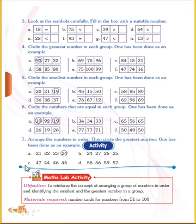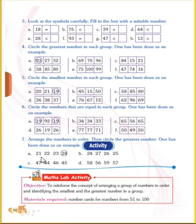Now see the next activity: arrange the numbers in order. One has been done as an example. Here what you must do is arrange the numbers. You see: 21, 22, 23 — and what comes last? 24. So arrange them like this in order.